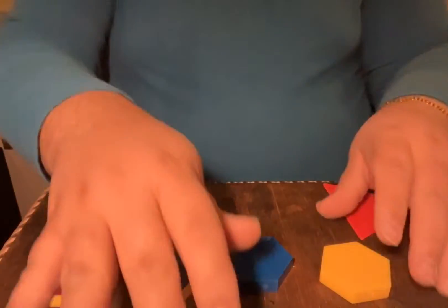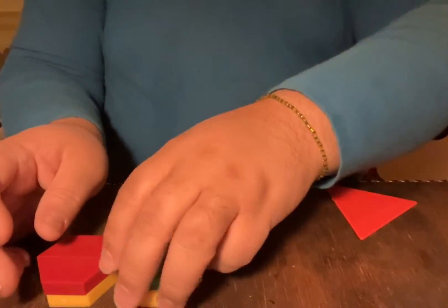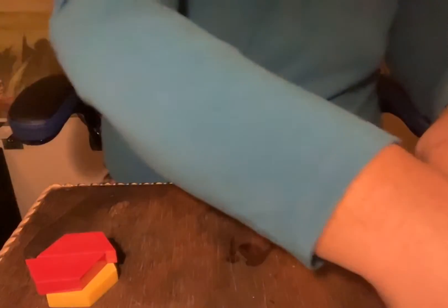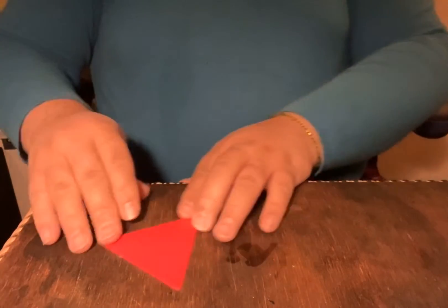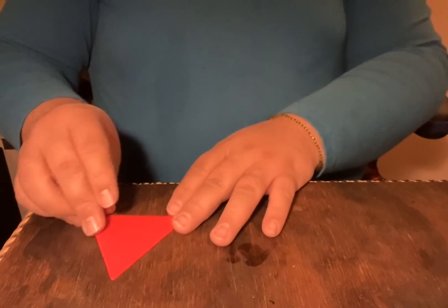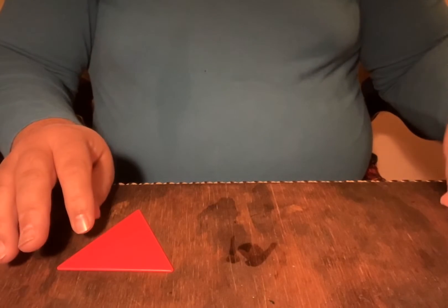So now I'm going to remove all these pattern block shapes and put the hexagons to the side so that I can bring in the triangle. Here's the first triangle that I have. This triangle is flat.